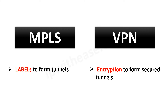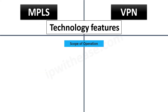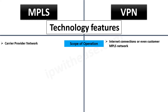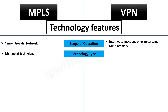Let's take a closer look at the differentiators between these two technology types in terms of various parameters. In terms of scope of operation, MPLS operates only on a carrier network while keeping customer traffic segregated. On the other hand, VPN can work both on internet connections and carrier network connections. With respect to technology type, MPLS is a multipoint technology connecting multiple customer sites, while VPN can work both on point-to-point and multi-site topologies. Site-to-site VPN is an example of point-to-point connection, while DMVPN is an example of a multi-site connection.